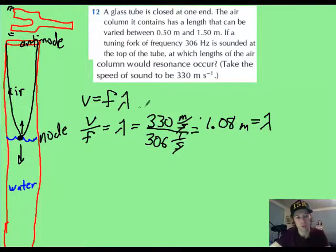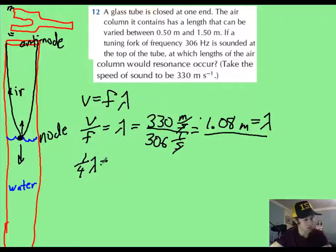First, I just use the wave equation here, velocity equals f lambda, to find out that a wavelength will be just over a meter long, 1.08. So now I want to say that if I have a quarter of a wavelength, which is the shortest and simplest air column that can cause resonance, I'm going to get one-fourth of 1.08, which is going to give me 0.27 meters.